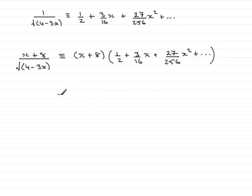So, multiplying this out, let's start with the x. x times each of the terms through the bracket here: that's going to give half x, then x times the 3 sixteenths x, that's going to be 3 sixteenths x squared.